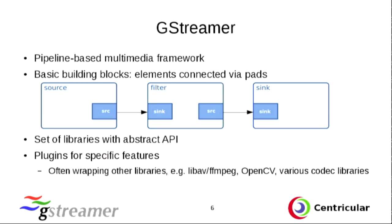You have some component producing something, then data comes out, goes into something else, and in the end you get it on the screen or to speakers or to the network. What we have is a set of libraries with a very abstract API, and all the actual functionality is provided by plugins. Often we are just wrapping other libraries like libAV, FFmpeg, OpenCV, and all kinds of codec libraries. We don't do any codecs ourselves — we build upon the work done by others and provide a unified API on top of that.